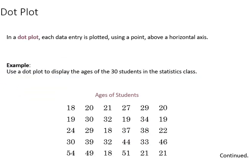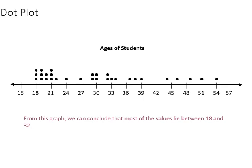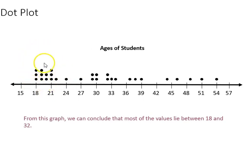We can also display the same data using what's called a dot plot, where each data entry is plotted with a point above a horizontal axis, and that looks like this. Again, we can see the 18-year-olds, the 20-year-olds, the 30-year-olds, and so on. You can see the higher frequency at the lower ages of a college classroom, and then it trails off as you get to the older ages.